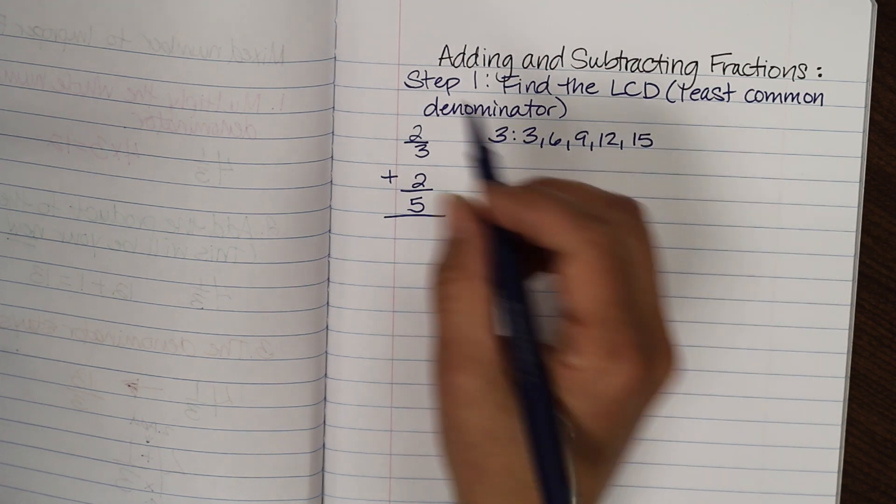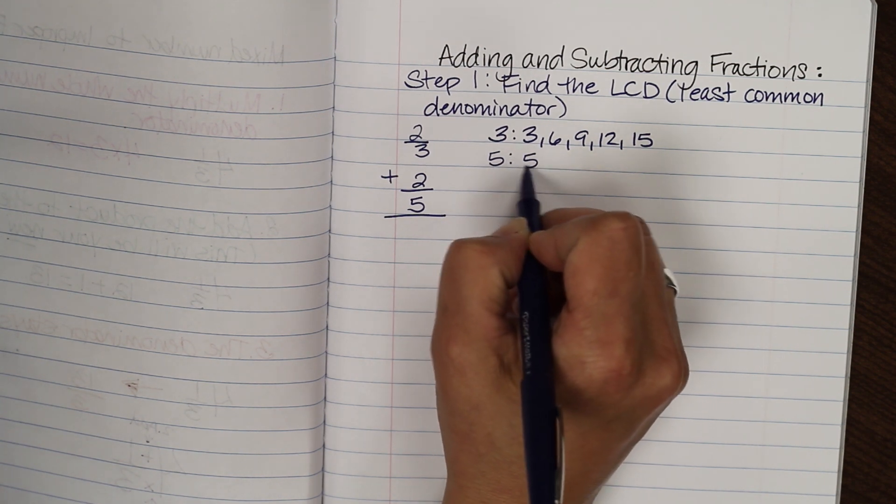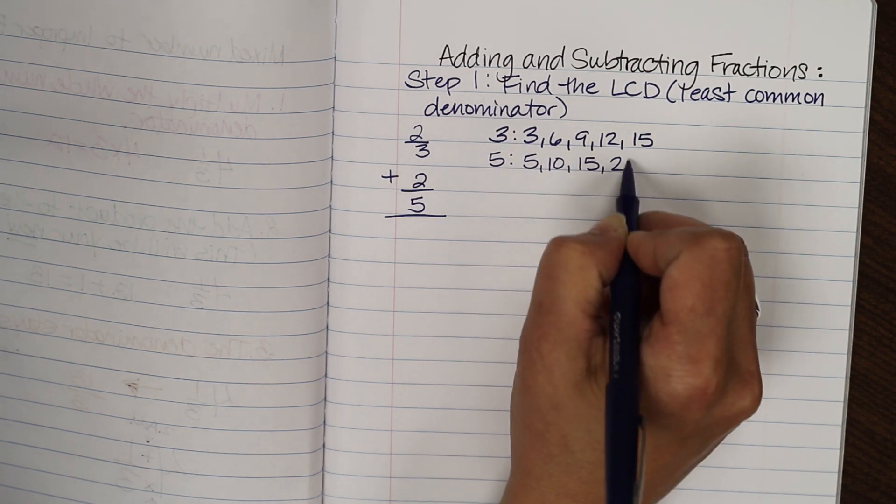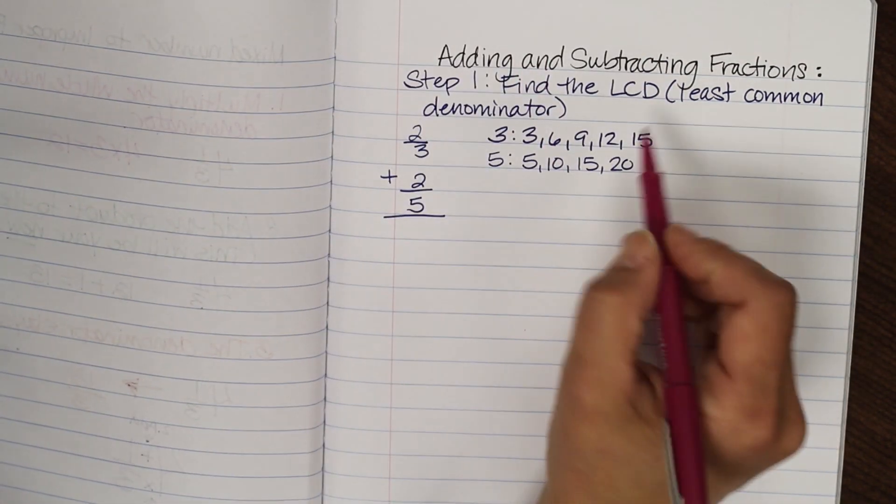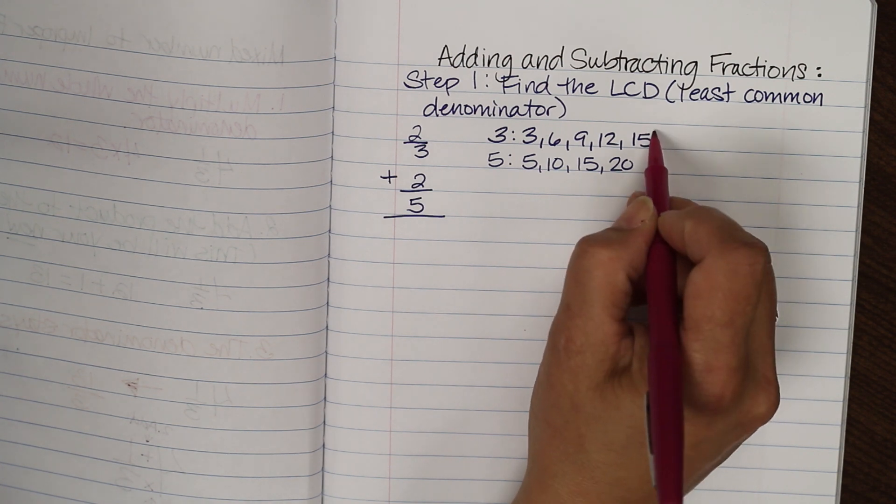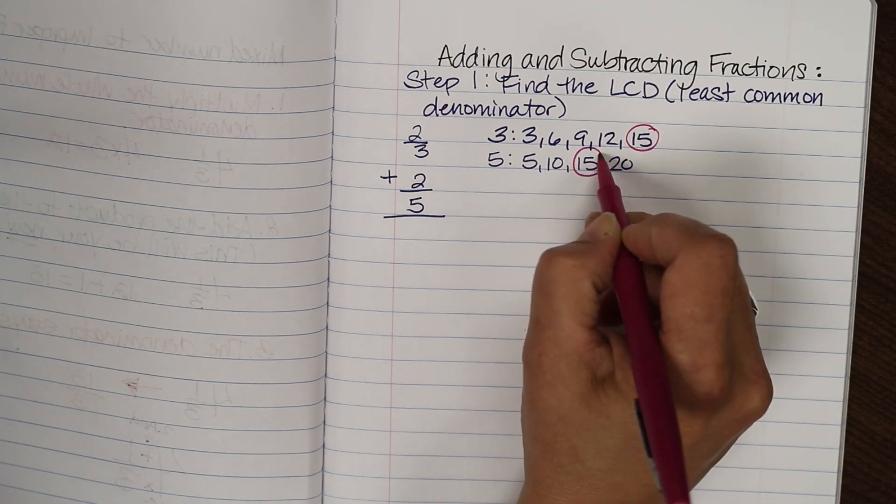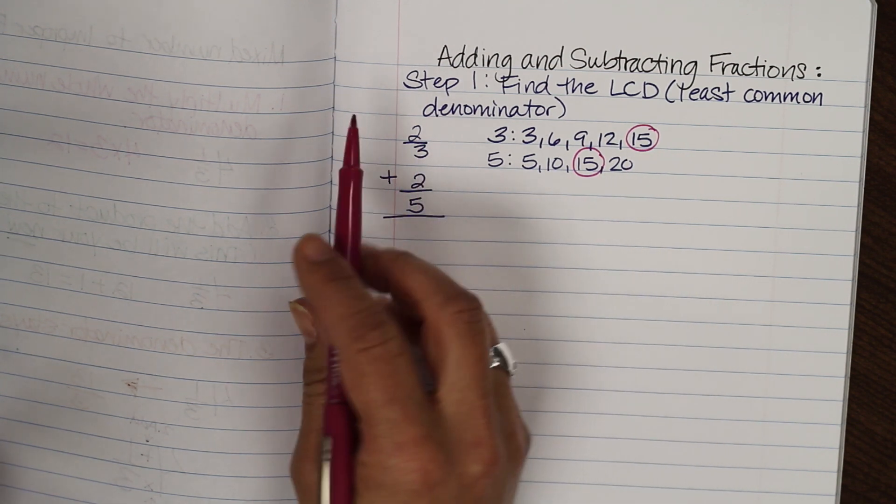So I'm just going to list a few here and then I'll go to five. And we know that's five, ten, fifteen, twenty, and I think I'm pretty good there. And you'll notice that I have a common denominator of fifteen. So I'm just going to circle those. So fifteen is the number I'm going to use for a common denominator and I'll show you how that works.